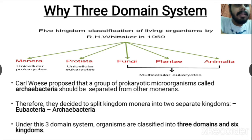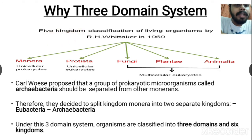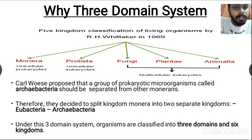The previously used system was the five kingdom classification system, where all living organisms were placed into five kingdoms: Monera, Protista, Fungi, Plantae, and Animalia.